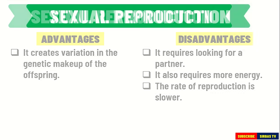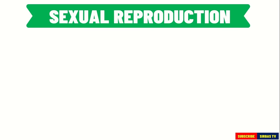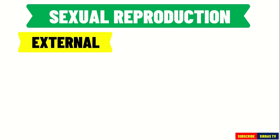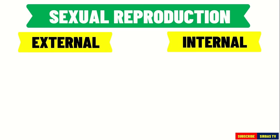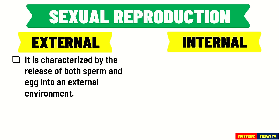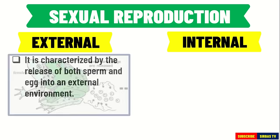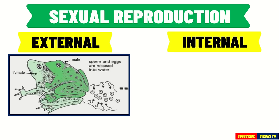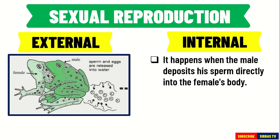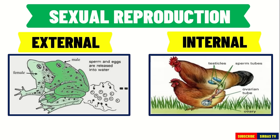The two types of fertilization that occur in sexual reproduction in animals are external fertilization and internal fertilization. External fertilization is characterized by the release of both sperm and egg into an external environment. Amphibians such as frogs reproduce through this process. On the other hand, internal fertilization happens when the male deposits his sperm directly into the female's body. All birds reproduce through internal fertilization, and all mammals such as humans also reproduce through internal fertilization.